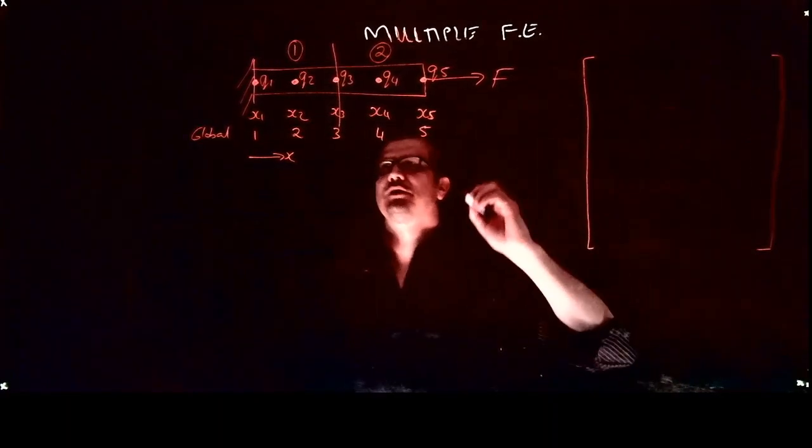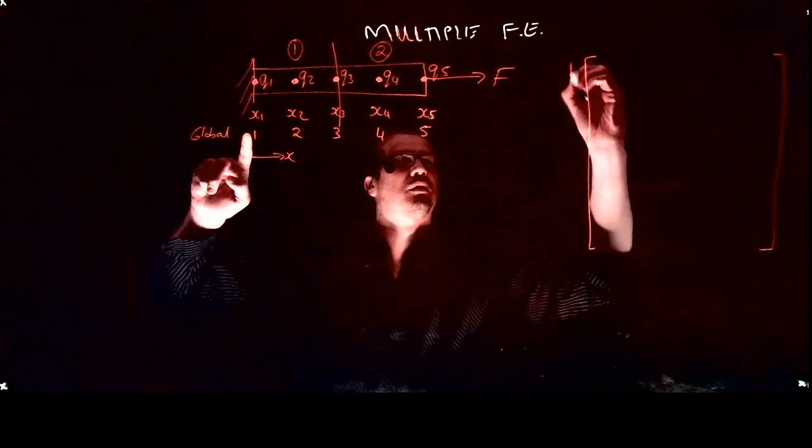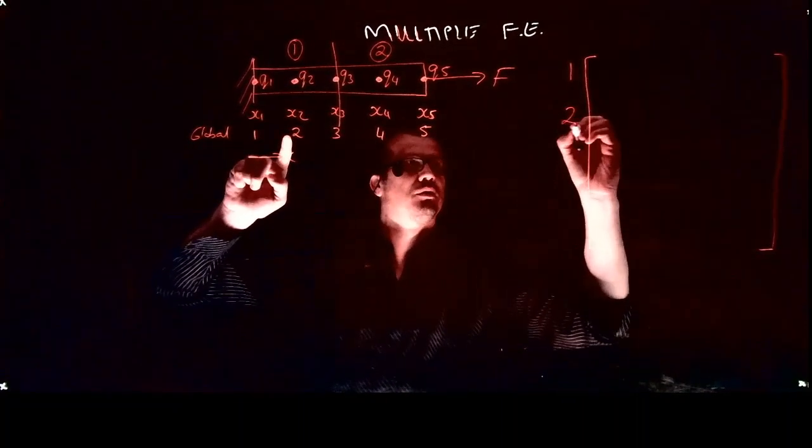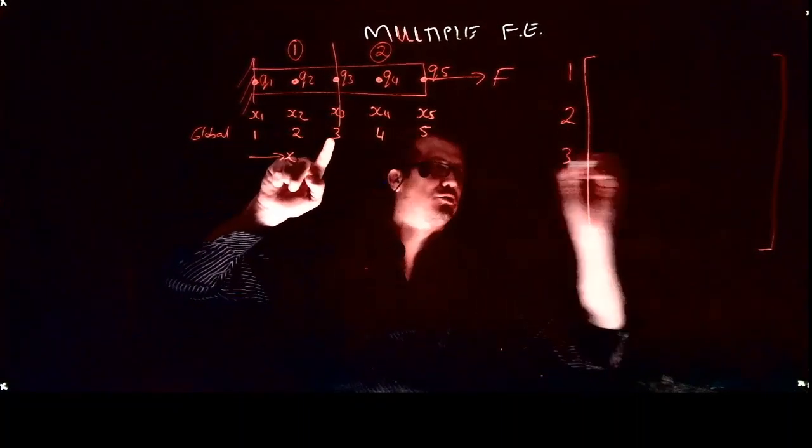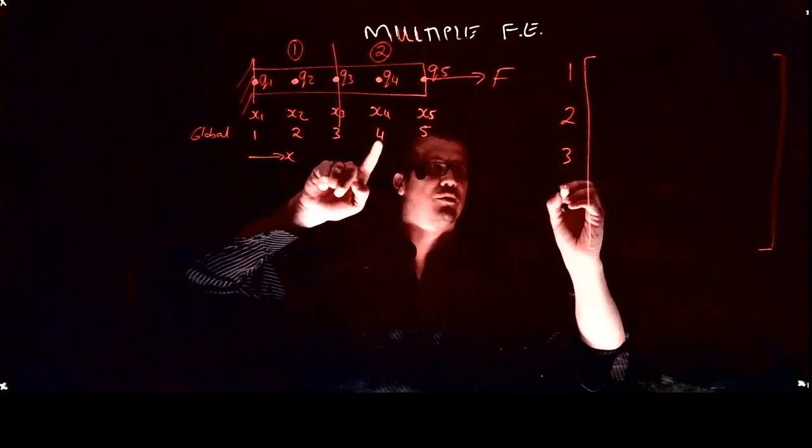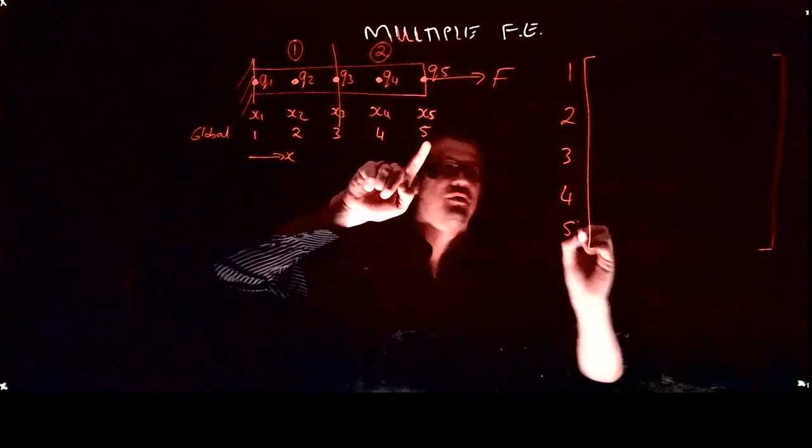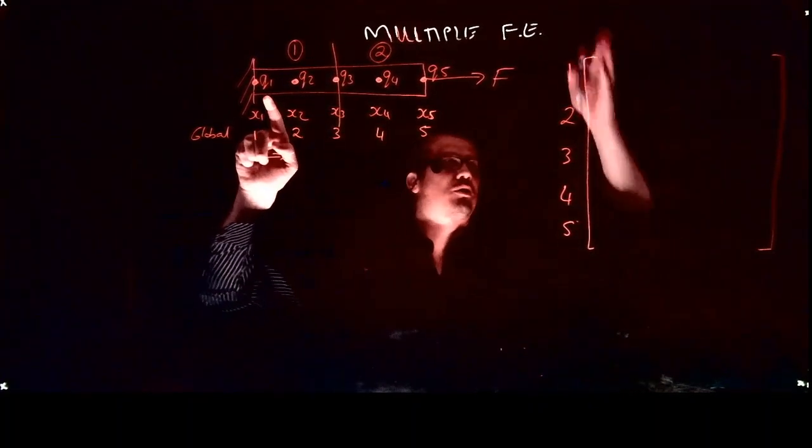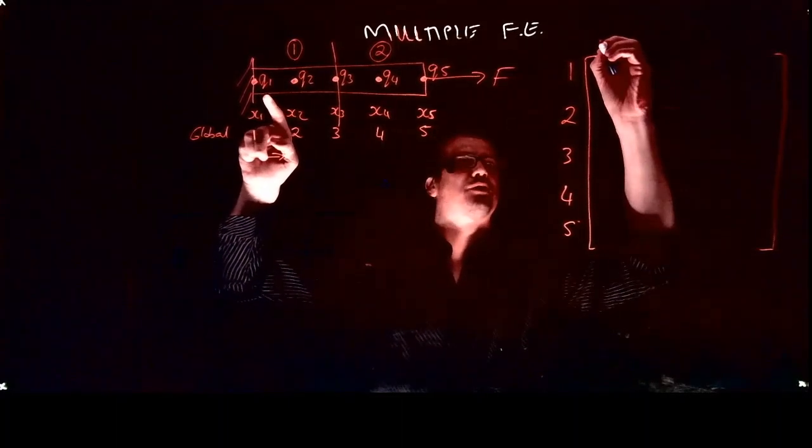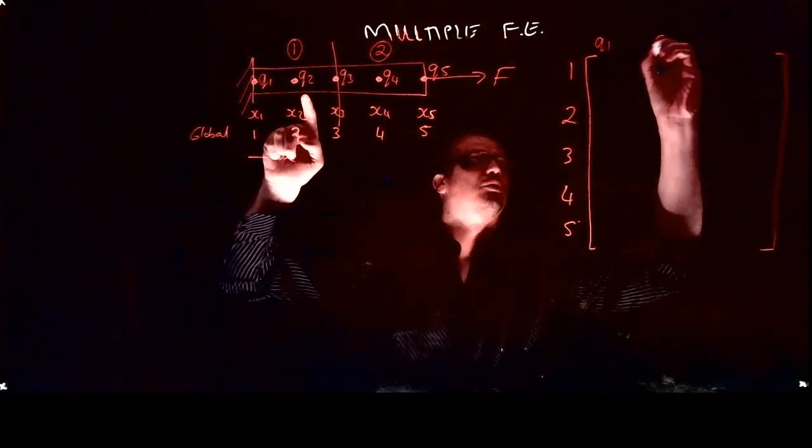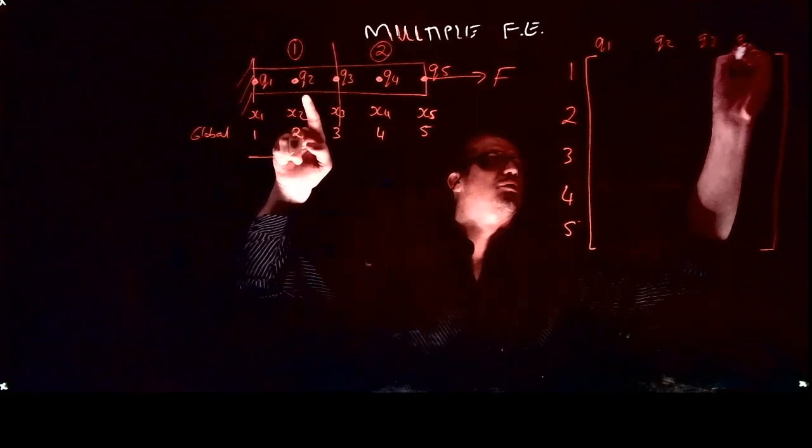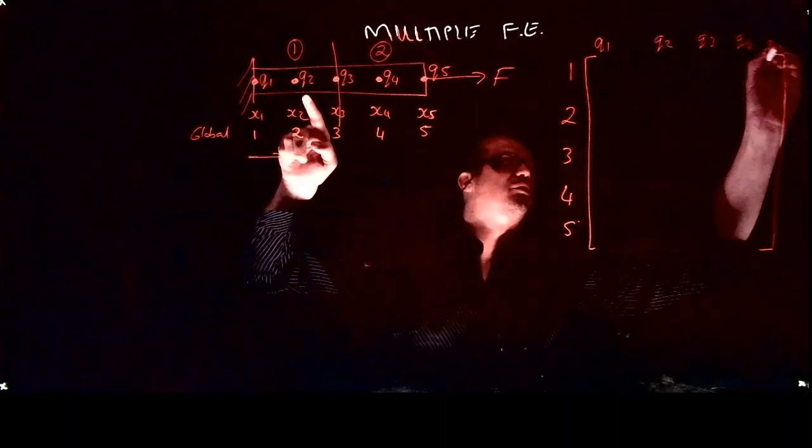We will have a force balance at node one, a force balance at node two, a force balance at node three. Each row, remember, is the force balance at each node - node four and node five. Then each column will be associated with an unknown: q1, q2, q3, q4, q5.